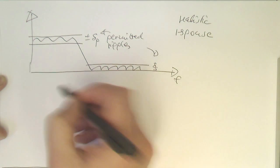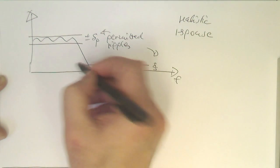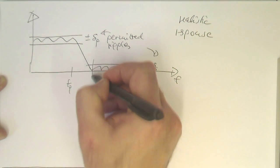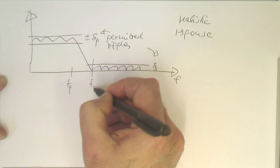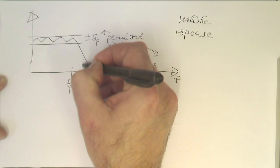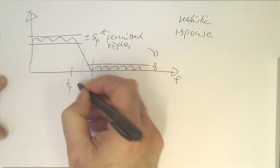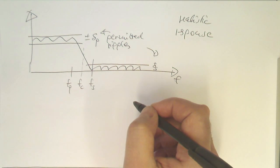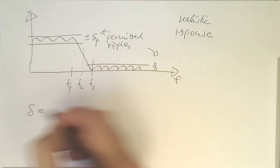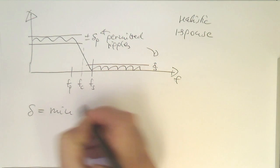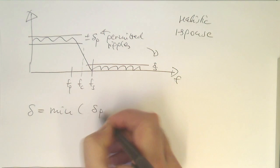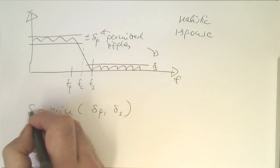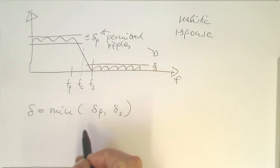This defines our FP for the pass band frequency and our FS for the stop band, and then right in the middle we have our FC. What we now define is delta, which is the minimum of delta P and delta S, because in the Kaiser approach we can only work with one delta value, not two. So we take the worst-case scenario.